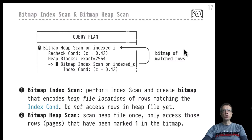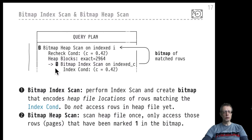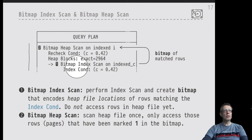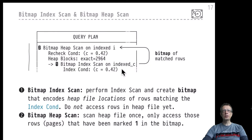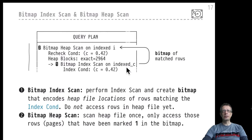In a plan, they would normally be organized like this. We read these plans from the inside to the outside, so the starting point is the bitmap index scan. It is performed on a particular index — the C index — but it's not a clustered index. Index C in our examples has been a non-clustered index.